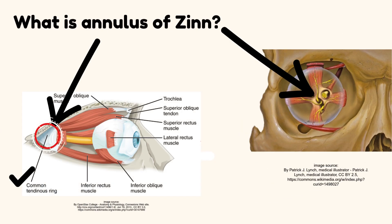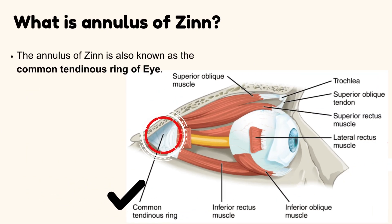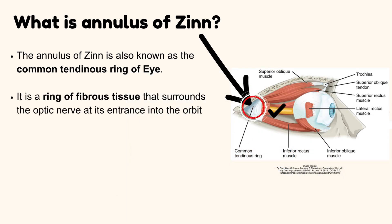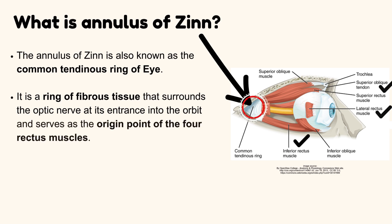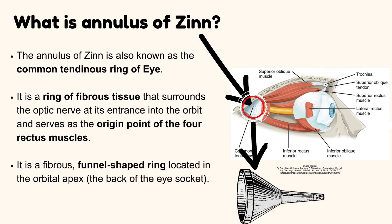What is the Annulus of Zinn? The Annulus of Zinn is also known as the common tendinous ring of the eye. It is a ring of fibrous tissue that surrounds the optic nerve at its entrance into the orbit and serves as the origin point of the rectus muscles. It is a fibrous, funnel-shaped ring located in the orbital apex, which is the back of the eye socket.